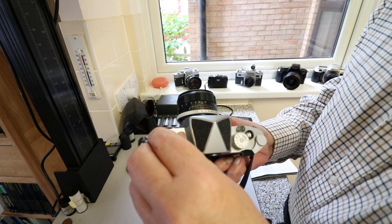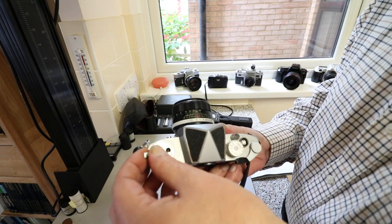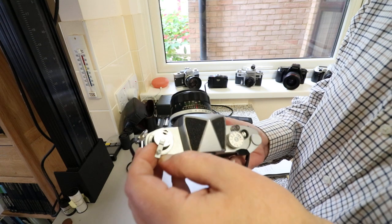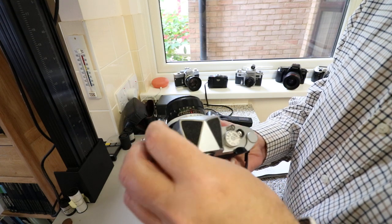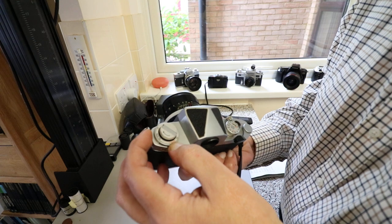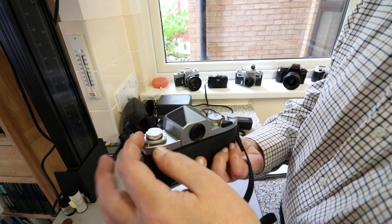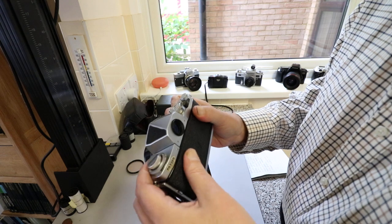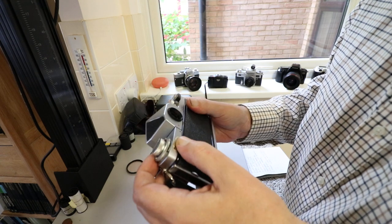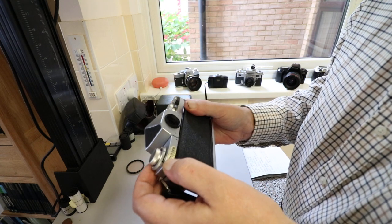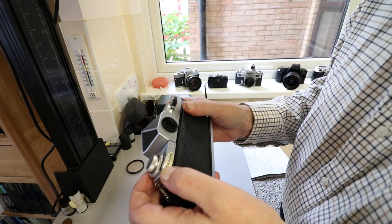On this side we have a rewind knob that folds out and pulls up. Surrounding it we have a film reminder system for color and black and white. There's a connection for the cold shoe that just slides in there. If it was a hot shoe it would have flash sync.